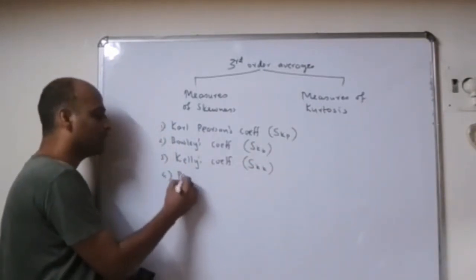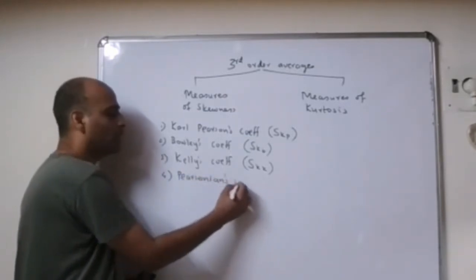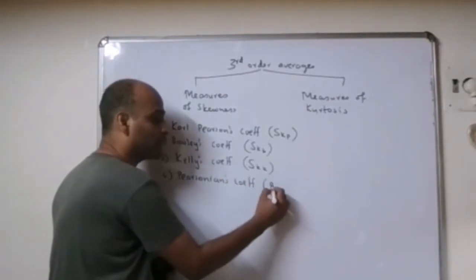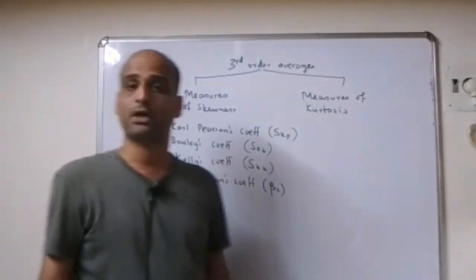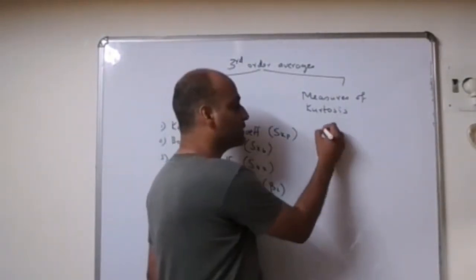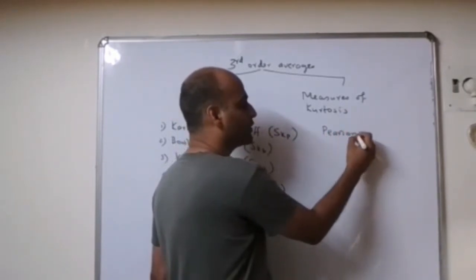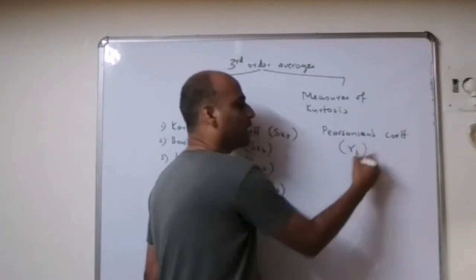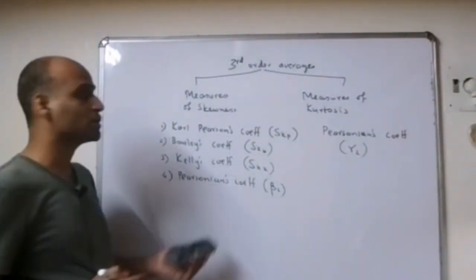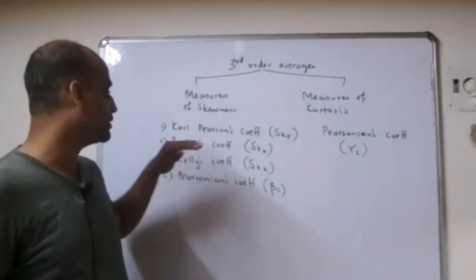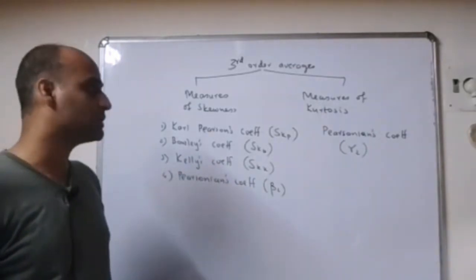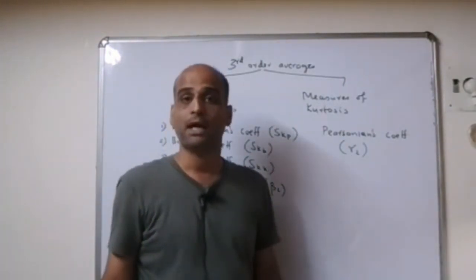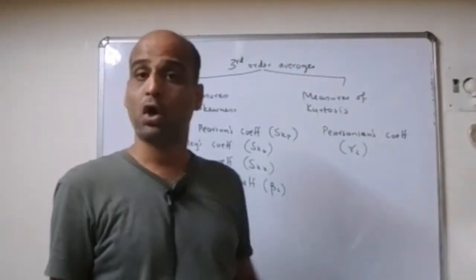The fourth one is the Pearsonian's coefficient of skewness, denoted by beta 2. In measures of kurtosis, there is one coefficient — again given by the Pearsonian's coefficient of kurtosis, denoted by gamma 2. So these were the measures of skewness and kurtosis, that is the averages of the third order.